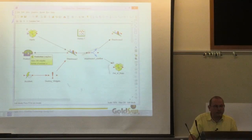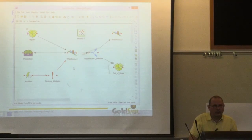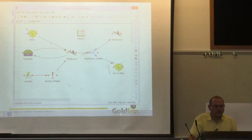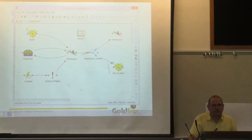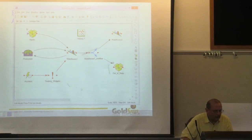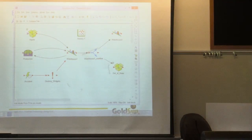So now I've put in a production rate. And now it looks like I have a double-headed arrow. That's a feedback loop: the inventory is a function of the production rate, and the production rate is a function of the inventory. Now I have a feedback loop.